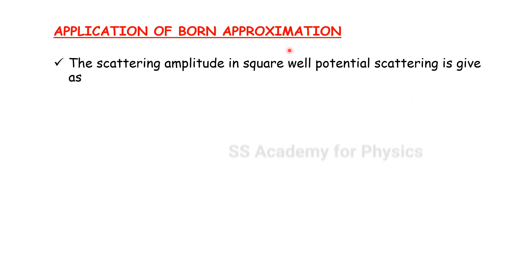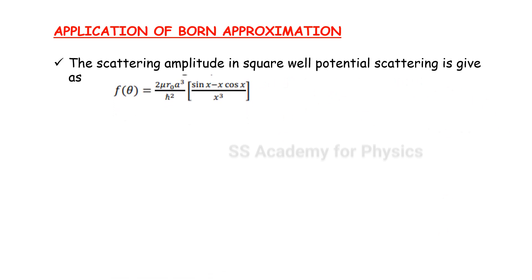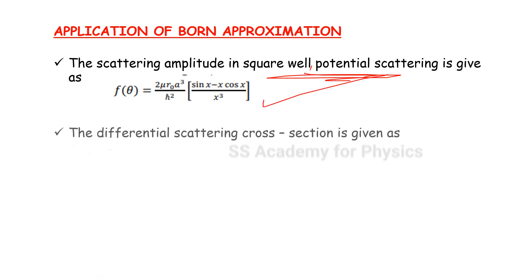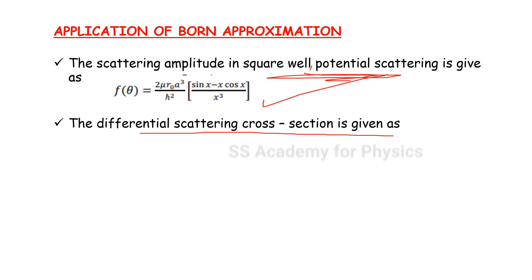For TRB, the key formula here is: the scattering amplitude in square-well potential scattering is given by a specific formula — look at it carefully. Then, the differential scattering cross section for square-well potential scattering — the differential scattering cross section dσ/dΩ — is also given.